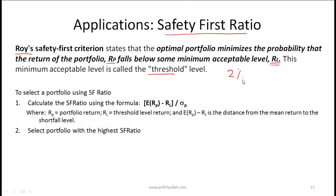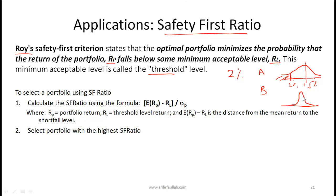You need to define a portfolio that minimizes the probability of returns falling below 2%. Say you have two possible portfolios A and B. Portfolio A has an expected return of 15%, but there's still a probability of returns falling below 2%. Portfolio B has a lower expected return of only 10%, but it's less risky because the probability of falling below 2% is much lower. Applying the safety first ratio gives a better ratio for B, making B the better portfolio.